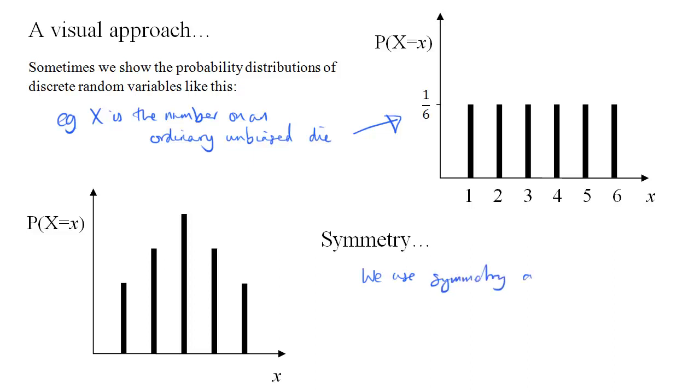And in general, we do use symmetry a lot in discrete random variables to simplify what we're trying to do. And if you can draw it in this way, or if you're given a visualisation such as this, it really makes the symmetry very easy to see. And that makes our lives easier.